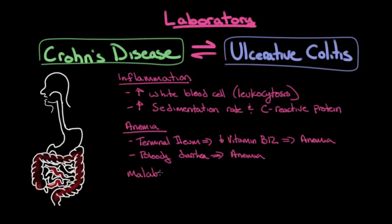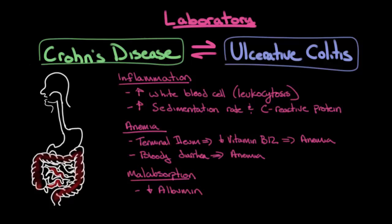The last category of laboratory findings is malabsorption. If enough of the small intestine and even parts of the large intestine are inflamed and not working properly, the body isn't able to absorb all the nutrients it needs — this is known as malabsorption, and it's what causes weight loss and fatigue in Crohn's disease and ulcerative colitis. One of the most common blood tests that serves as a marker of malabsorption is a low albumin level. Similar to the history and physical exam, laboratory findings are fairly nonspecific but very sensitive — if none of these findings are present, chances are someone does not have inflammatory bowel disease.